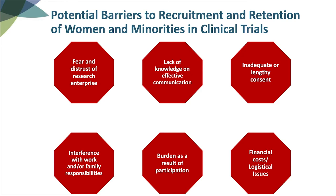Some researcher barriers include lack of knowledge or understanding about cultural differences among racial and ethnic minorities that can result in ineffective communication strategies, affecting both recruitment, enrollment, and retention. Another barrier is incorrect assumptions about the effectiveness when transferring information from one group to another, and the inappropriate use of recruitment strategies among racial and ethnic minority groups that were developed for white participants. There is also lack of knowledge about how to adapt recruitment materials culturally and linguistically, and failure to facilitate culturally sensitive and meaningful discussions and informed consent to ensure truly informed choices in the enrollment process.